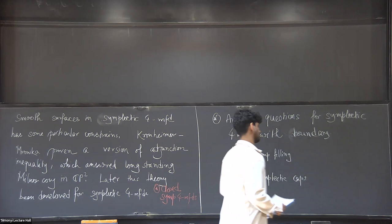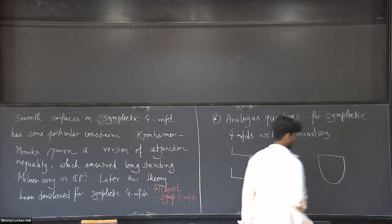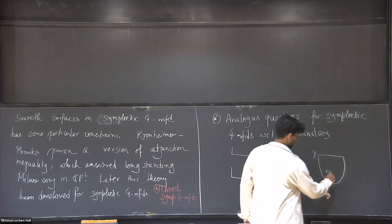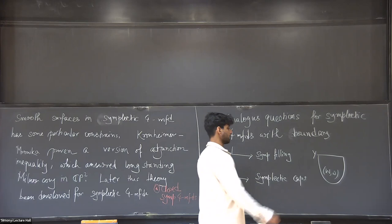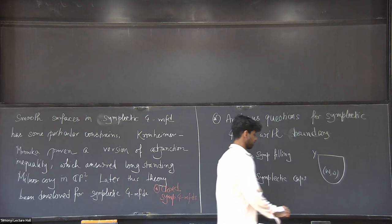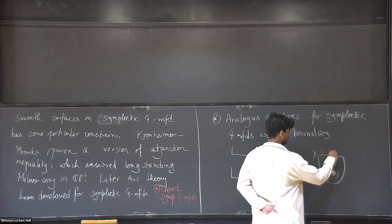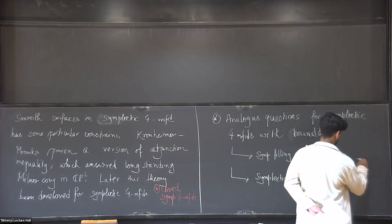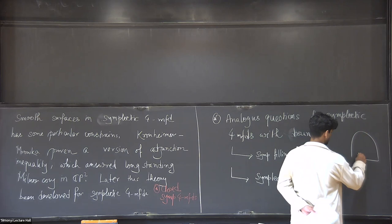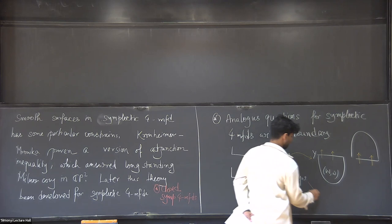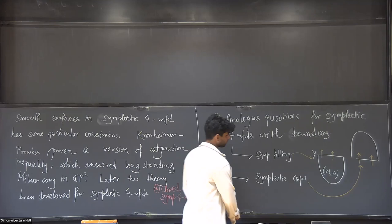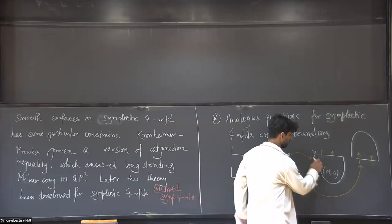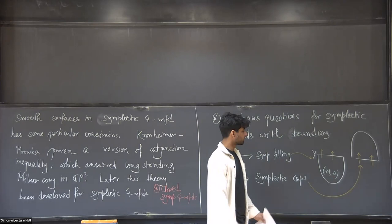Pictorially, we have a manifold W with boundary Y and a symplectic structure. Near the boundary, this symplectic structure generates a Liouville vector field. Depending on whether this Liouville vector field points outward with respect to the boundary or inward, we call it a symplectic filling or a symplectic cap respectively. The symplectic structure also induces a contact structure — a two-plane field which is nowhere integrable.